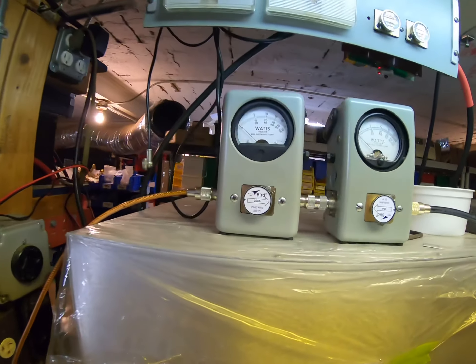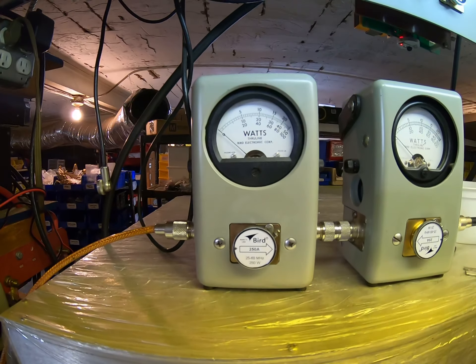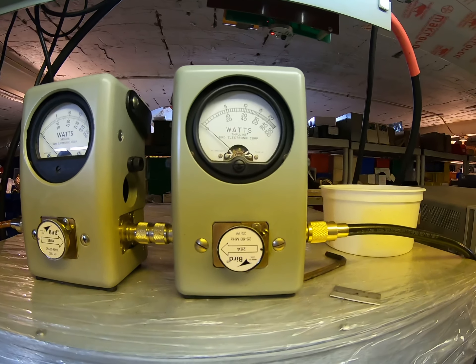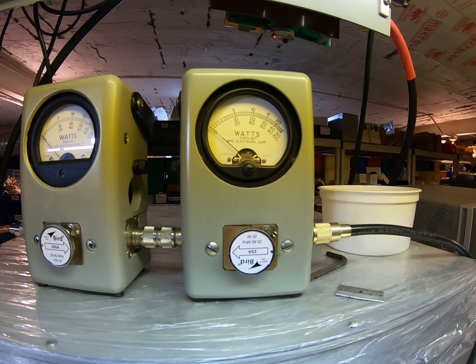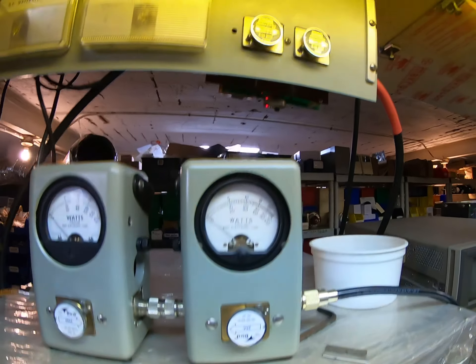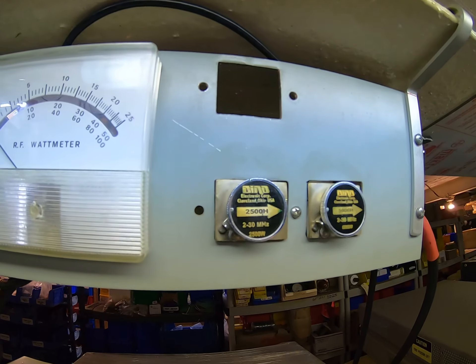250 watt slug for forward, 25 watt slug for reflect. Our input SWR into the amplifier, 2500 up there for RMS, 5000 for PEP. And we are at 14.8.